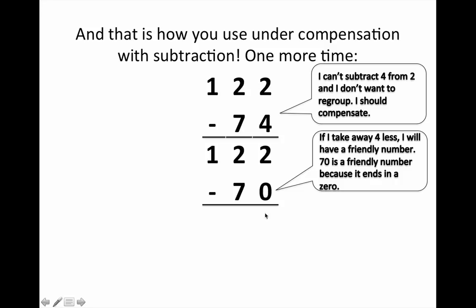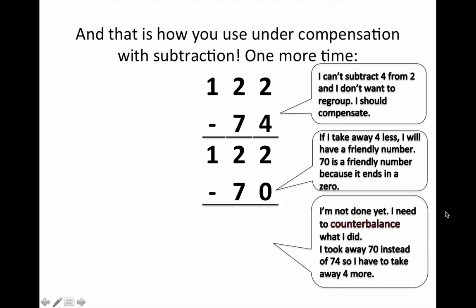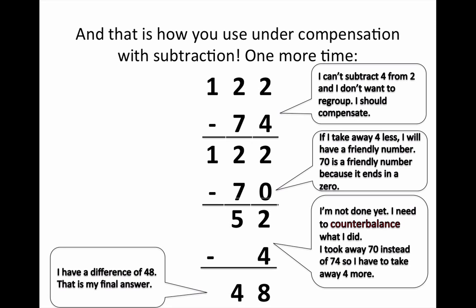2 take away 0 is 2 and 12 take away 7 is 5. So we have 52 so far. What happens next? I'm not done yet. I need to counterbalance what I did. I took away 70 instead of 74 so I have to take away four more. I have a difference of 48. That is my final answer.